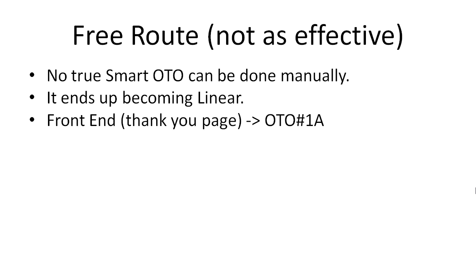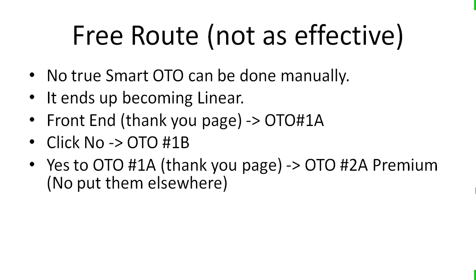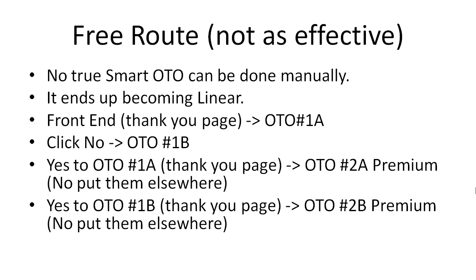You send them to 1A, and if they say no, you could offer them a different offer — 1B. If they say yes and actually purchase it, you have to set up so that the next thank you page is one-time offer 2A premium. If they say no, they are sent elsewhere. And if they say yes to one-time offer 1B, you send them to 1B, and the thank you page directs to 2B premium.